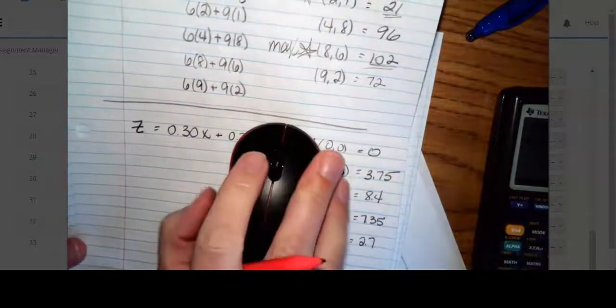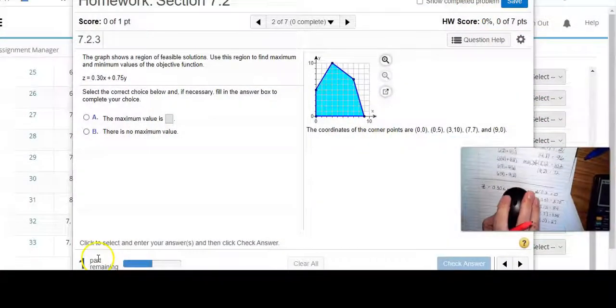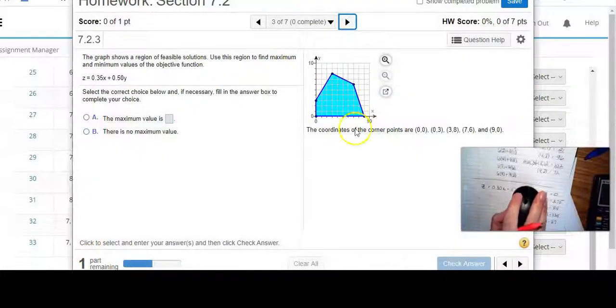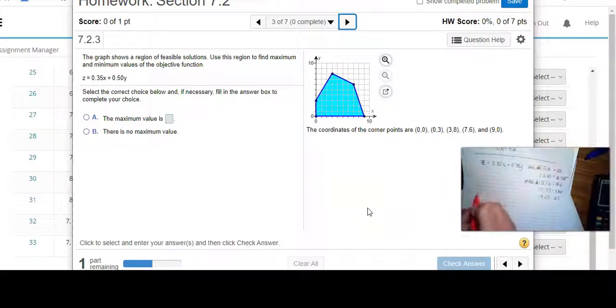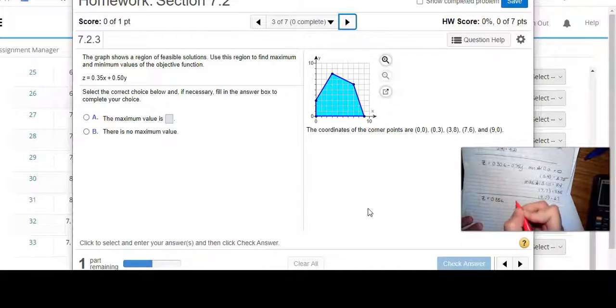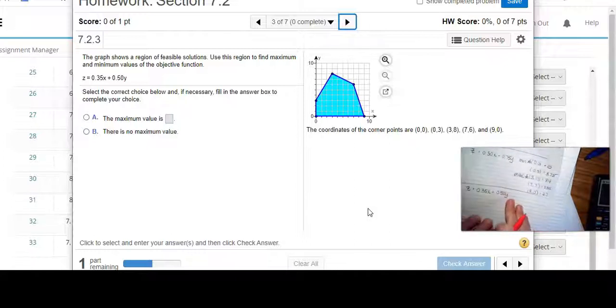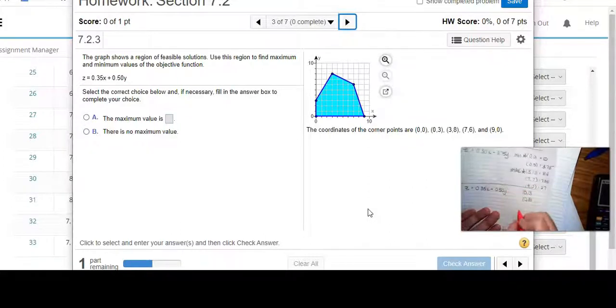So pretty straightforward. I'm going to minimize that. Let's try it again. So my objective function is z equals 0.35x plus 0.5y. And my points are 0,0, 0,3, 3,8, 7,6, and 9,0.